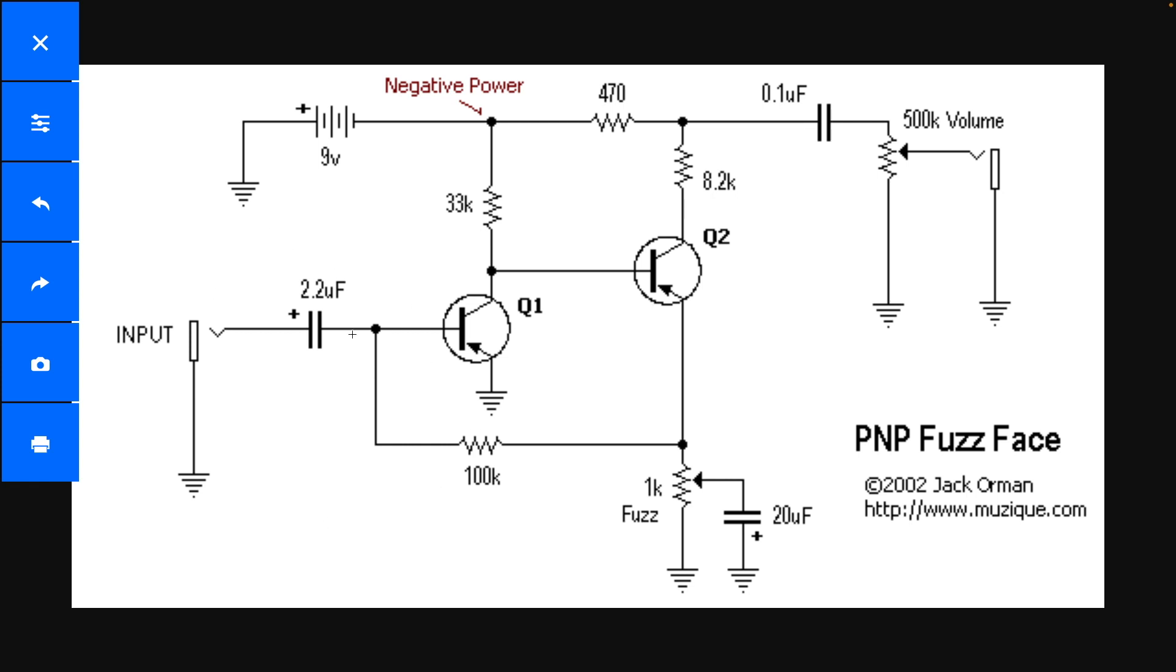Okay, let's get into it. So first thing to note is that our power is backwards. It says negative power right here, because positive is ground and the negative terminal of our battery is going to be what we're calling VCC. And this is unusual for a lot of reasons. You just don't see it that much.